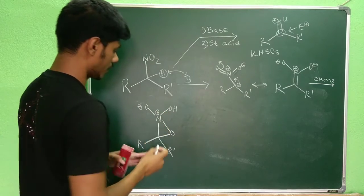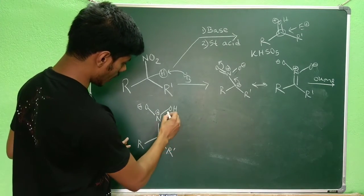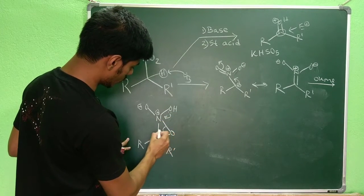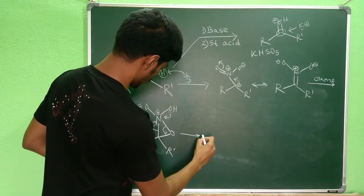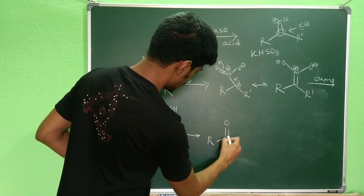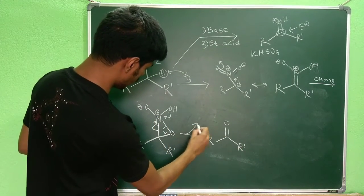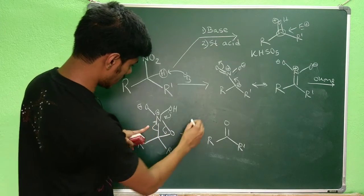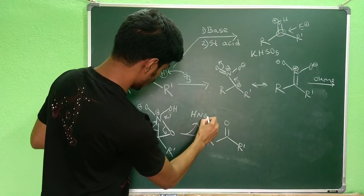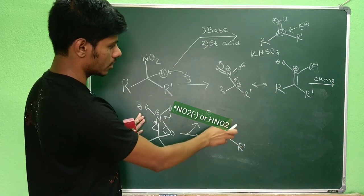When the oxygen pushes electrons, this epoxide-like nitrogen intermediate opens: you get R-C=O and the leaving group is HNO2-minus (nitroxyl). This is how you obtain the ketone or aldehyde using the oxone pathway.